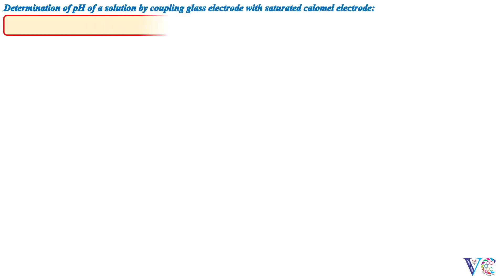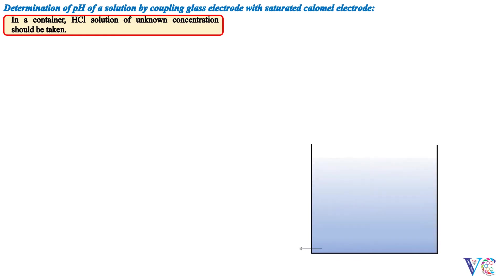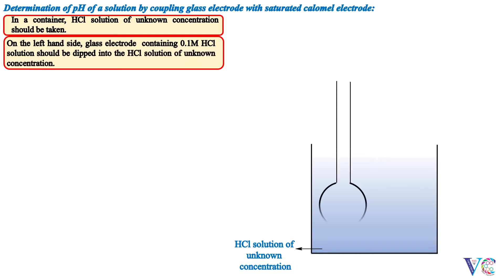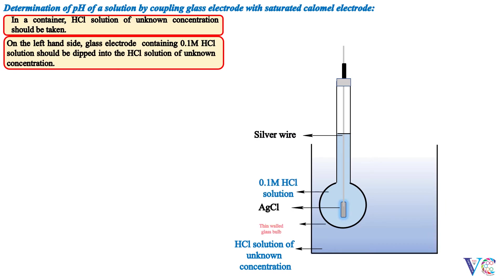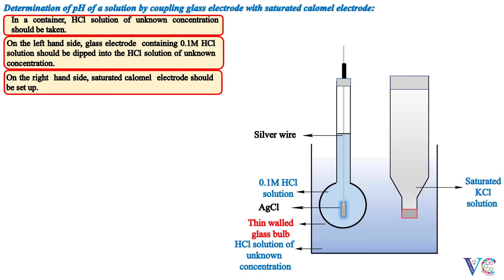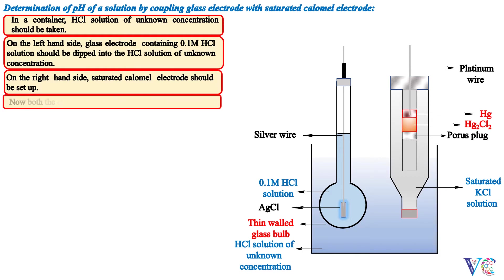Determination of pH of a solution by coupling a glass electrode with a saturated calomel electrode. In a container, HCl solution of unknown concentration is taken. On the left-hand side, the glass electrode containing 0.1 M HCl solution should be dipped into the HCl solution of unknown concentration. On the right-hand side, a saturated calomel electrode should be set up. Both electrodes are coupled through a potentiometer.